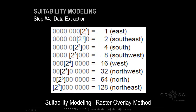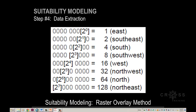Two to the zero gives us one, two to the first gives us two, and so on, giving us the numbers one through 128. Each of these numbers corresponds to a direction: one is east, two is southeast, four is south, and eight is southwest, as we can see in this diagram.